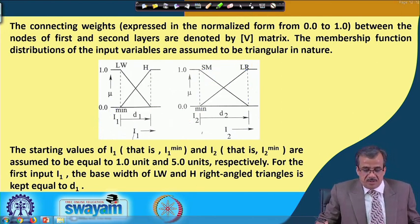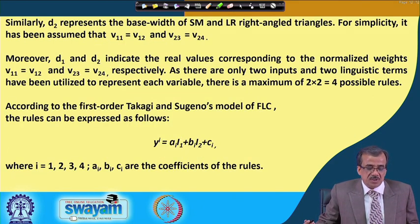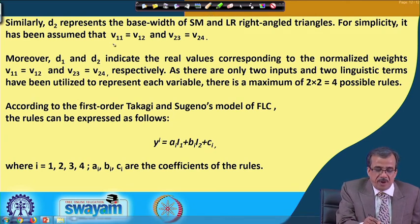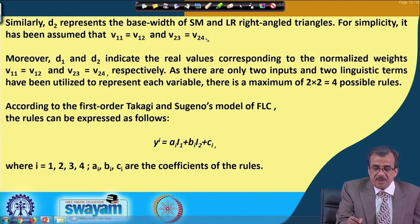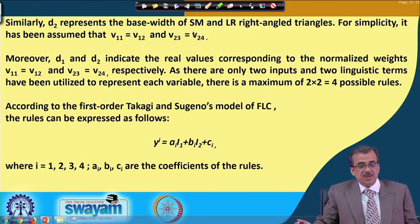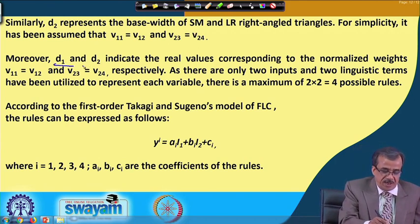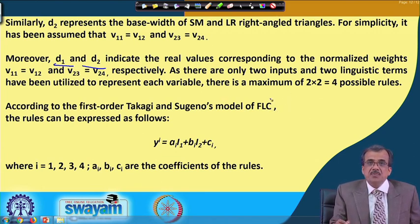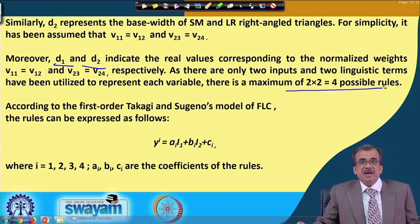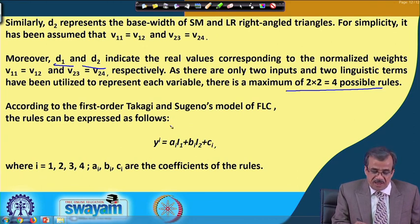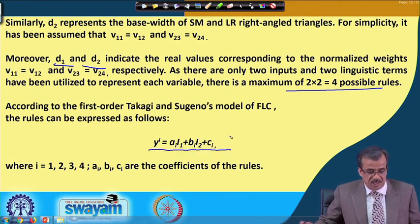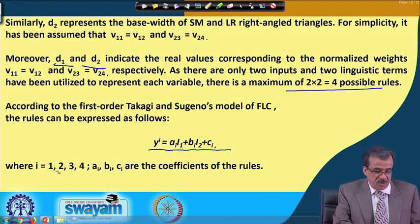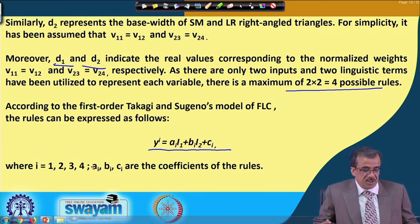The rest of the statement of this particular problem: we use connecting weights like V11 equals V12 and that is denoted by D1. Similarly, V23 equals V24 and that is going to represent D2. These values for D1 and D2 should lie in a particular well-defined range. As I told, there are four possible rules — 2 multiplied by 2 — and the output of the i-th rule, yi, is nothing but a_i·I1 + b_i·I2 + c_i, where i is 1, 2, 3, 4, and a_i, b_i, c_i are the coefficients of these particular rules.